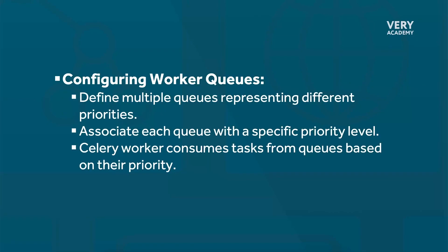In addition to assigning task priority values, we can also configure worker queues in Celery to handle tasks based upon their priority levels. We can define multiple queues, each representing a different priority level. These queues act as logical containers for tasks with similar priorities, so we can create queues such as high priority, medium, and low priority, and then categorize tasks accordingly.